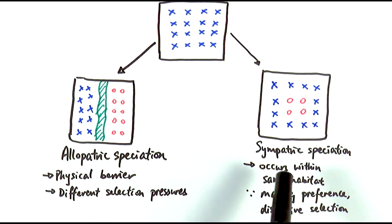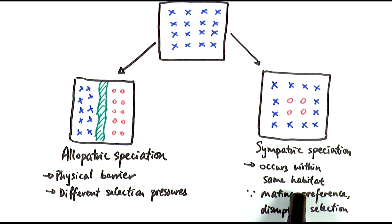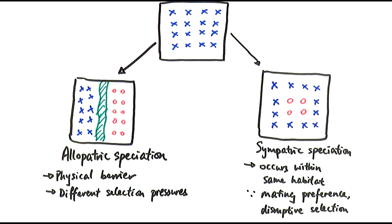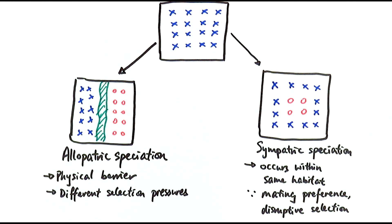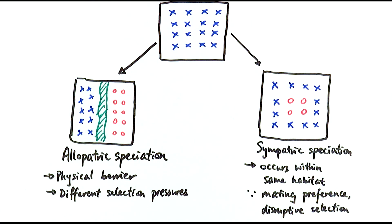On the other hand, sympatric speciation occurs within the same habitat. They were not separated, but due to mating preferences or disruptive selection — such as when animals couldn't recognize each other as the same species — they don't reproduce together, and they reproduce only with those they could recognize. Therefore, over many generations, they might become a brand new species within the same habitat. Selective breeding that humans do to pick specific organisms to interbreed for certain characteristics is in a sense a sympatric method of pushing evolution along — not necessarily producing a completely different species, but perhaps subspecies — and could be an example of sympatric speciation if taken to the extreme.